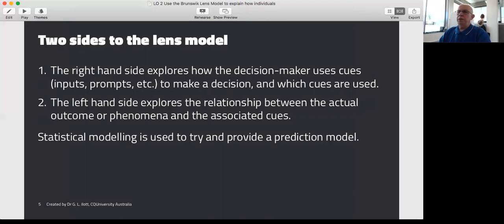There are two sides to the lens model. On the right-hand side is the decision maker who uses the cues and the decision being made. On the left-hand side is the relationship between the actual outcome that you want and the associated cues that you're going to use. Like all good psychology theories, this is a statistical model, a positive model, so it's very objective rather than subjective.